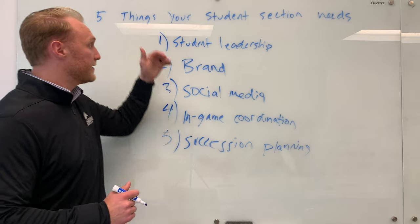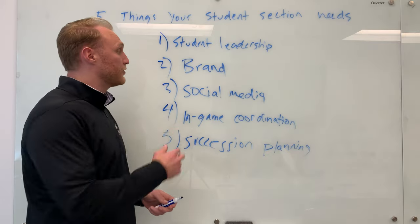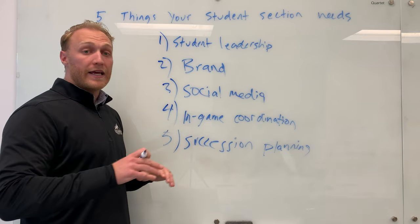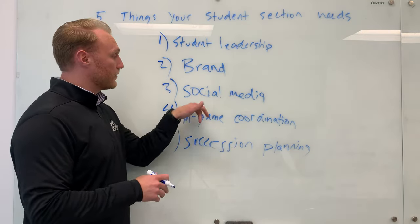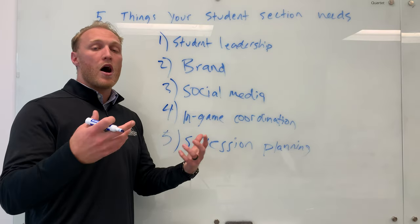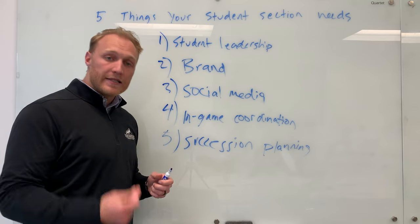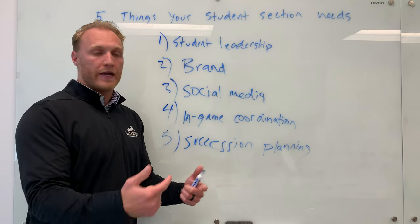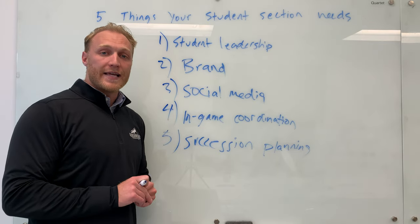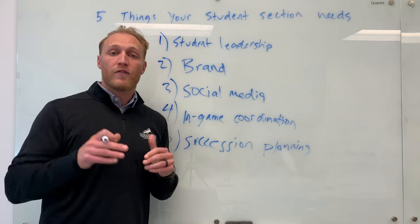Here are the five essential things every student section needs. One: student leadership — you're not maximizing your full potential without it. Two: brand — give students something to latch onto emotionally and take ownership in — it's free marketing and exposure. Three: social media — student section-specific accounts to highlight culture so incoming freshmen know who to follow and if it looks fun. Four: in-game coordination — systemize cheers, chants, and music so everybody's on the same page. Five: succession planning — if the section is only as good as your current leaders without a plan, future leaders won't be set up for success.